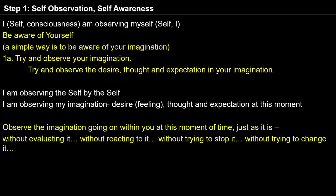In step 1 of exercise 1, which is very simple, we are trying to observe ourselves. I am observing myself, and I can observe myself because I have the potential to observe. In step 2, I am becoming aware of myself — how will I be aware? I am trying to look into my imagination, trying to observe it.